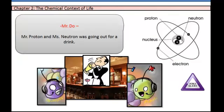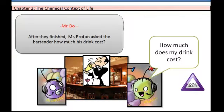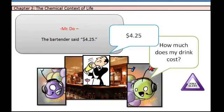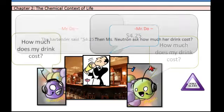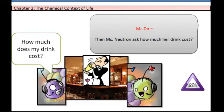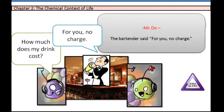Mr. Proton and Ms. Neutron were going out for a drink. After they finished, Mr. Proton asked the bartender how much his drink cost. The bartender said $4.25. Then Ms. Neutron asked how much her drink cost. And the bartender said, for you, no charge.